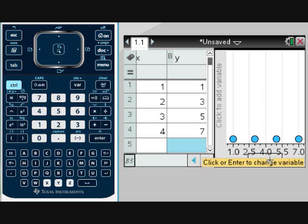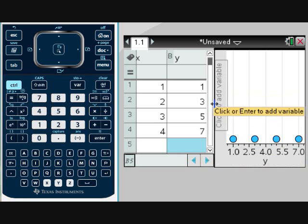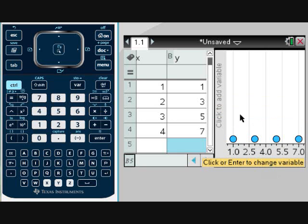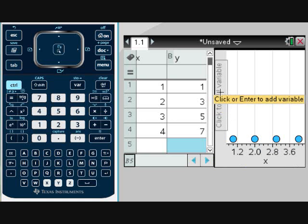But notice how this is a little bit odd because our axes are not in the right place. We know that our horizontal axis is supposed to be X, and right now it's labeled Y. So we're going to click on it and select X. Then we're going to go to the other axis and select Y.